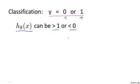Even if all of your training examples have labels y equals 0 or 1. And it seems kind of strange that even though we know that the labels should be 0 or 1, it seems kind of strange if the algorithm can output values much larger than 1 or much smaller than 0.